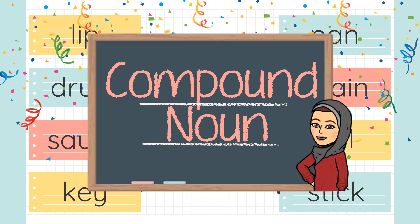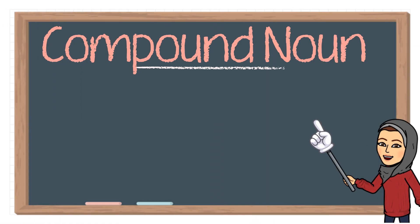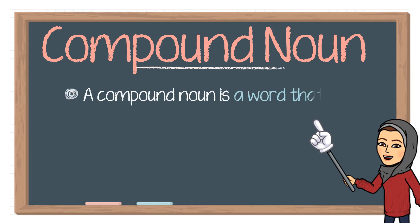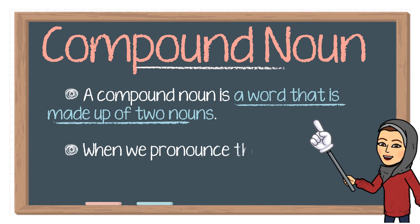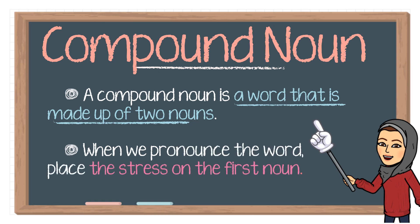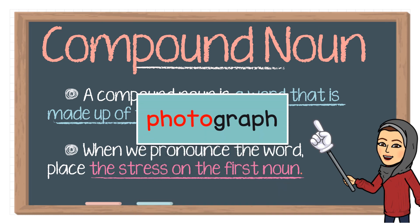Now let's see what a compound noun is. A compound noun is a word that is made up of two nouns, just like the game we played — mix and match — where I asked you to connect the nouns from left to right. When these two nouns are connected together, they become a compound noun. When we pronounce compound nouns, the stress is placed on the first noun.